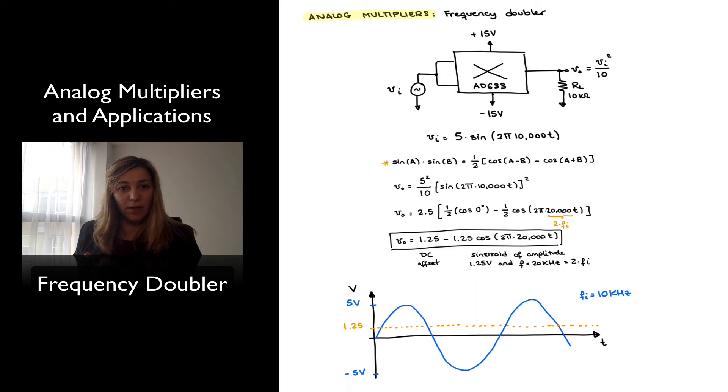Now in this case, because it is a cosine, it's going to be 90 degrees shifted with respect to the input signal, and because the cosine has a negative value.